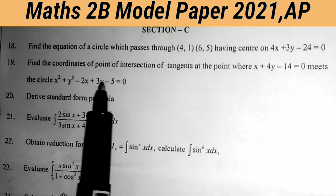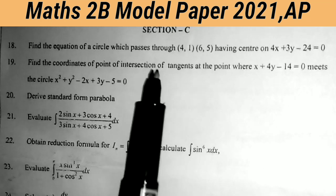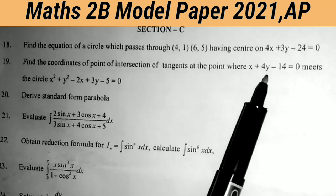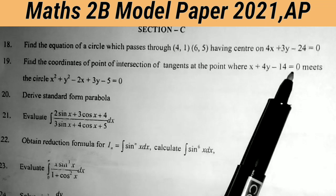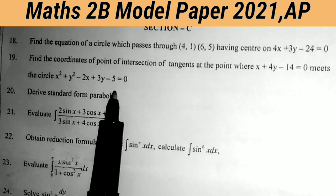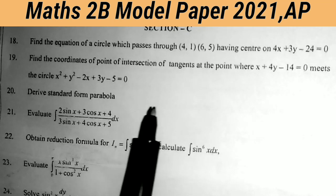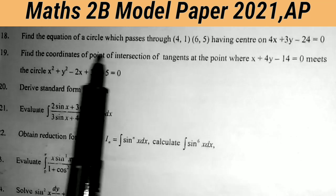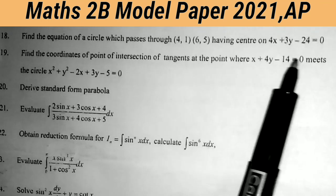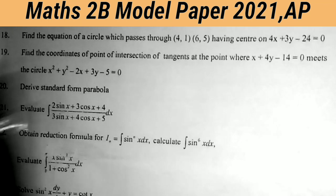Nineteenth question: find the coordinates of the point of intersection of the tangents at the points where the line x + 4y − 14 = 0 meets the circle x² + y² − 3x + 3y − 5 = 0. To find the coordinates of the point of intersection, it is enough to apply the pole formula. Important sum.